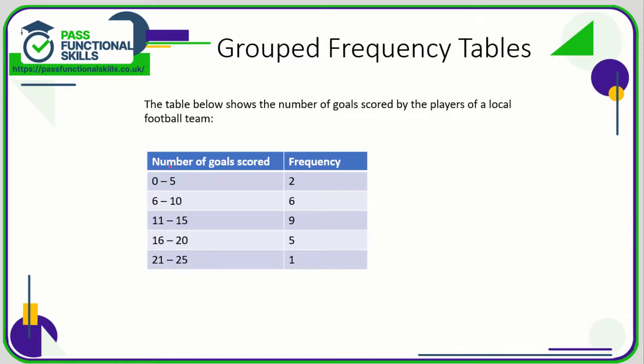First thing we notice is that the number of goals scored are put into ranges, so zero to five. And so frequency of two, that means two people scored between zero and five goals. Now we don't know how many goals these two people scored. It was somewhere between zero and five, it could have been zero, it could have been five, we will never know.